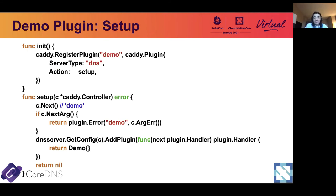This is the setup function and the init function. As you can see, it's pretty straightforward. For the init function, since we named this plugin 'demo', we pass demo as a string and also set DNS as the server type. The setup is a function that will process the configuration. Since in this demo plugin we are not going to pass any configuration parameters, we'll just do the configuration the way like any other plugins. You can just copy and paste if you are going to do similar things in your code.